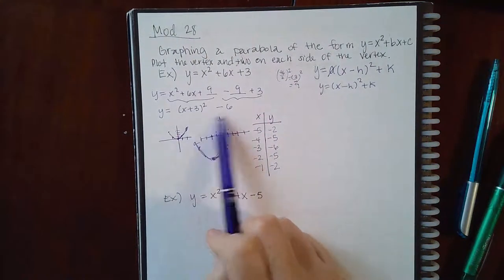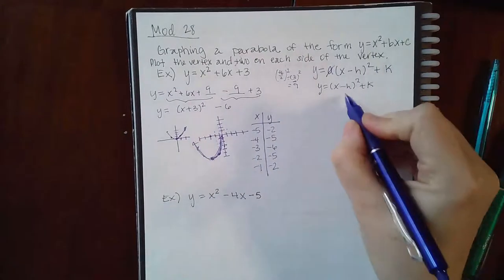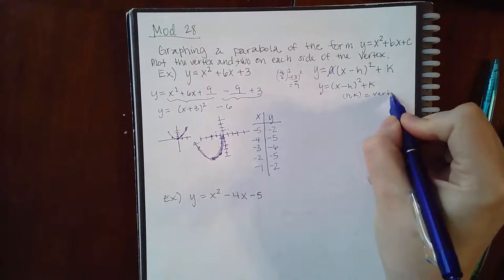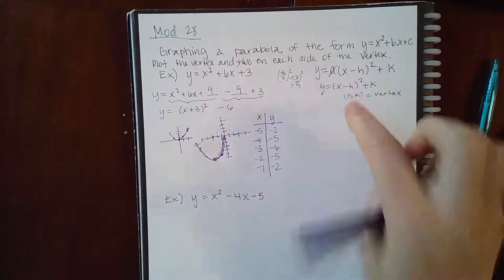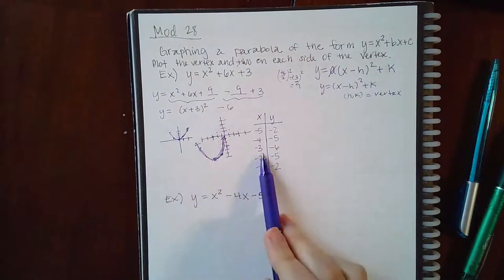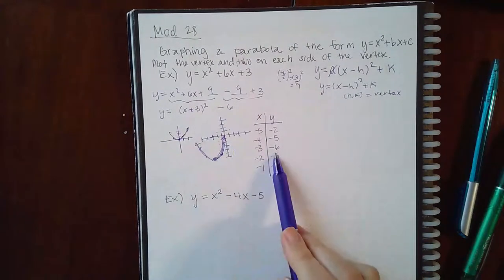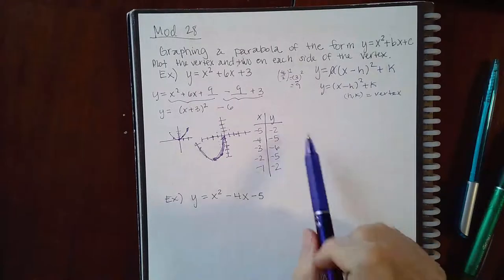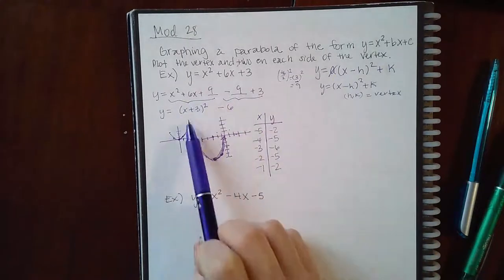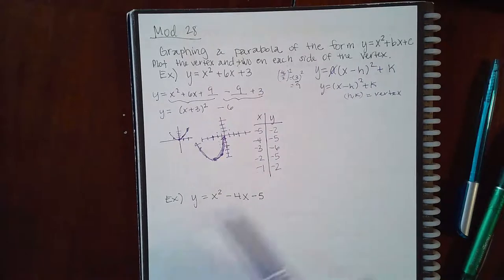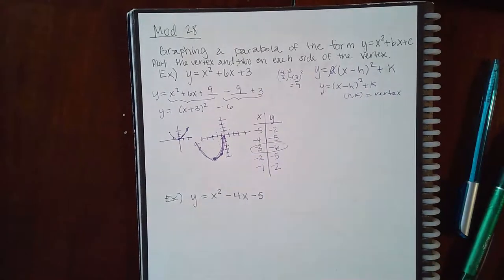What you start with is the vertex, which is h comma k from the transformation form. Notice that even though there is a positive three in the equation, the vertex is at negative three and negative six, because h takes the opposite sign.